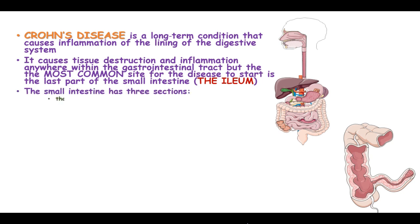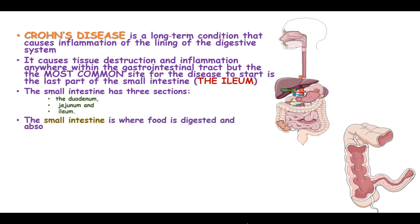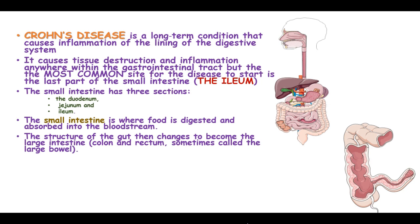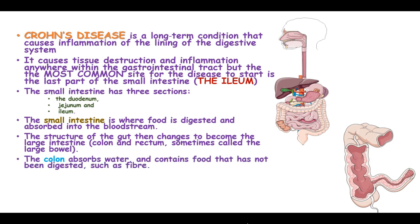The small intestine has three sections: the duodenum, jejunum, and the ileum. The small intestine is where food is digested and absorbed into the bloodstream, and the structure of the gut then changes to become the large intestine known as the colon, sometimes called the large bowel. The colon absorbs water and contains food that has not been digested, such as fiber.